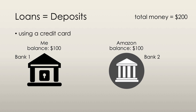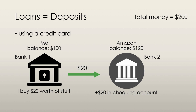Let's say we have an economy with me and the company Amazon, and we both use two different banks. My bank balance is $100 and Amazon's bank balance is also $100. Now let's say that I buy $20 worth of stuff from Amazon using my credit card. All that happens is that $20 gets deposited into Amazon's checking account.